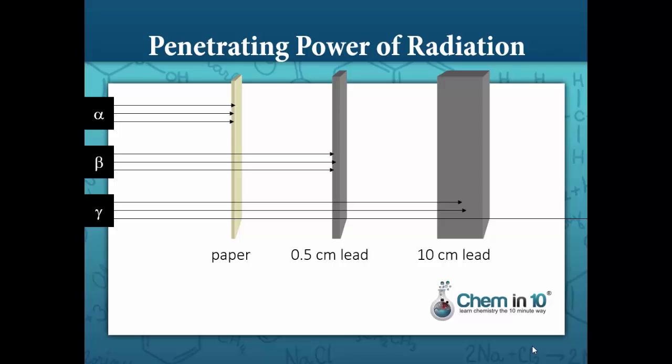In this diagram we have paper, 0.5 centimeter thick lead and 10 centimeter thick lead barriers. As you can see, alpha particles can be stopped by paper. Alpha particles can also be stopped by skin, so you have less chance of being exposed to alpha radiation unless you actually consume the alpha particles.